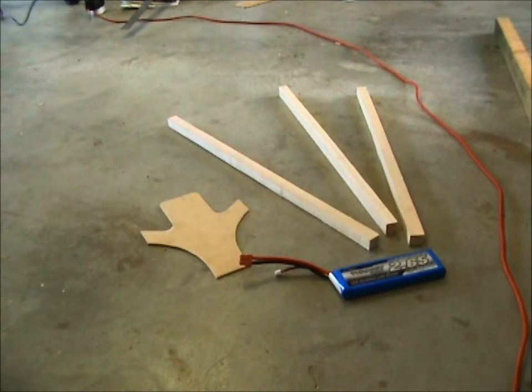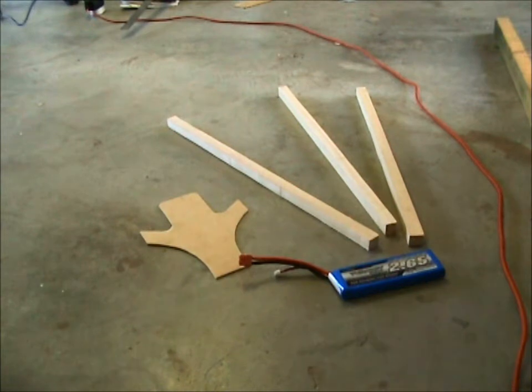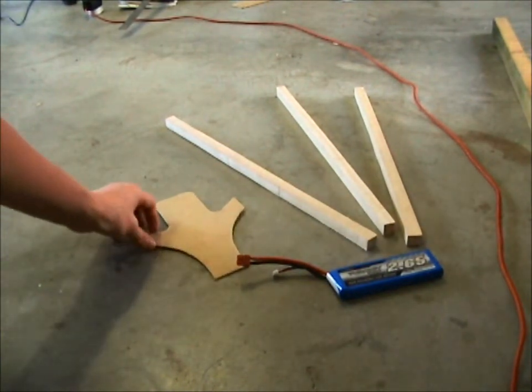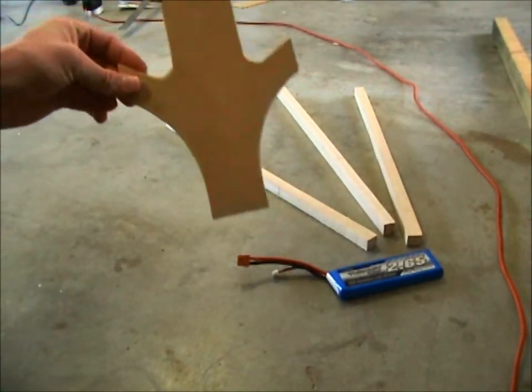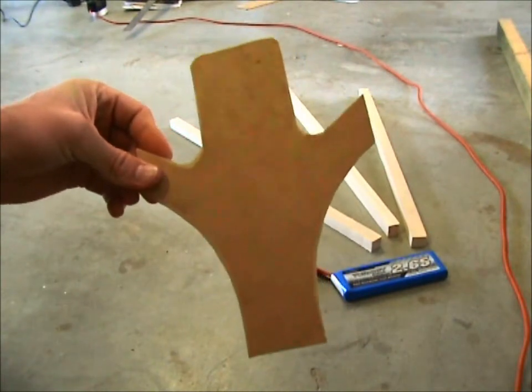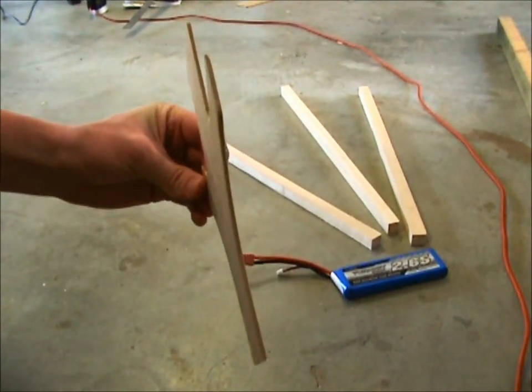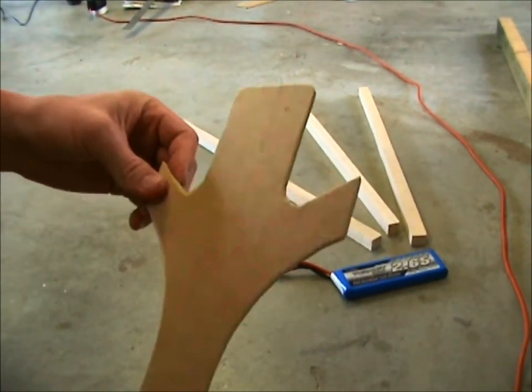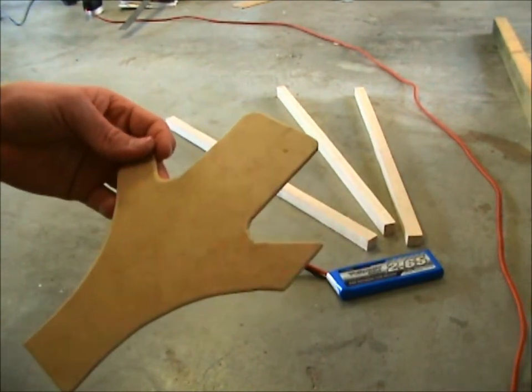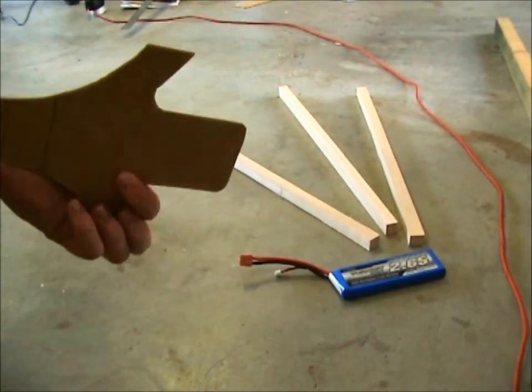To start with, I cut out the chassis or main body for the tricopter which looks like that. I just used 4 or 5mm MDF and I got the template from rcexplorer.se.